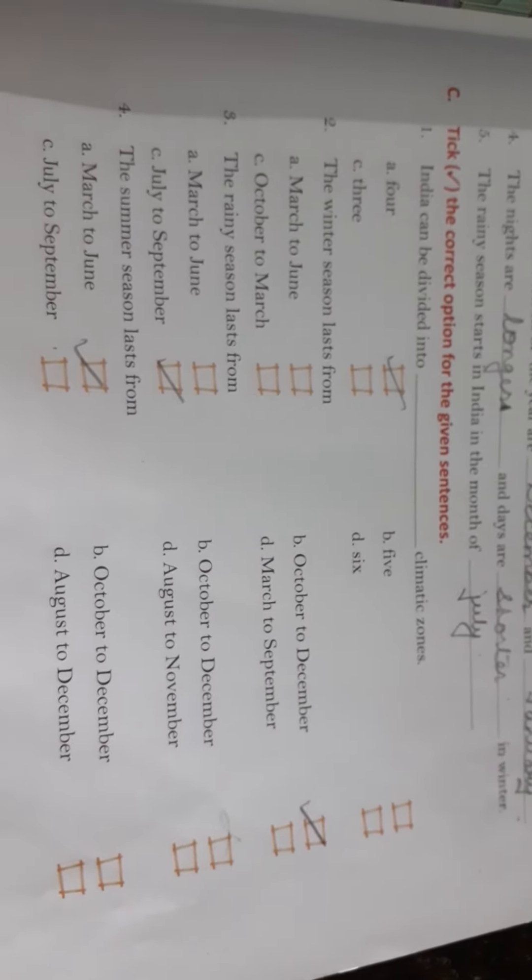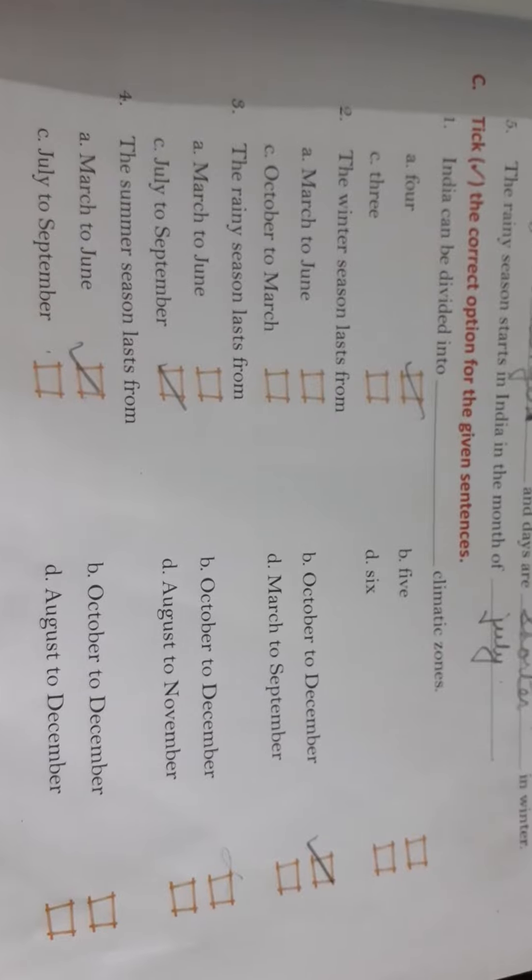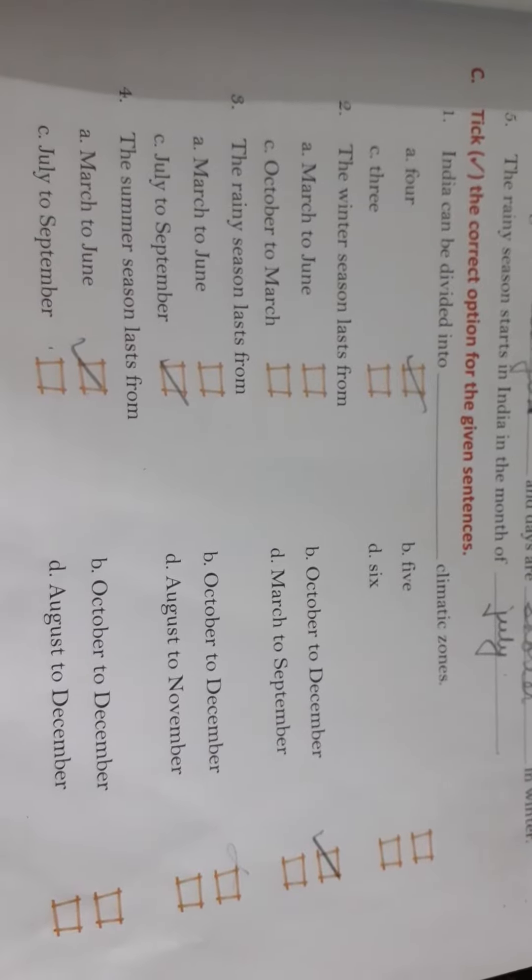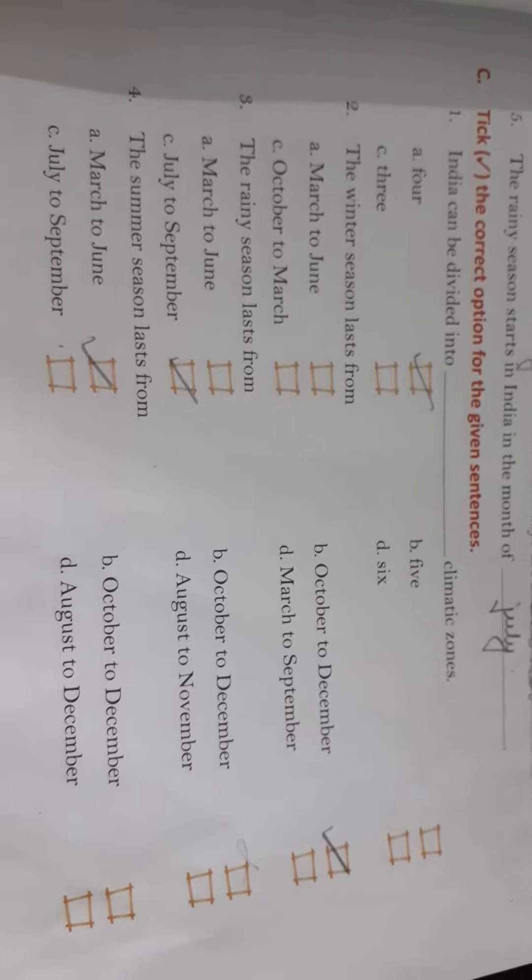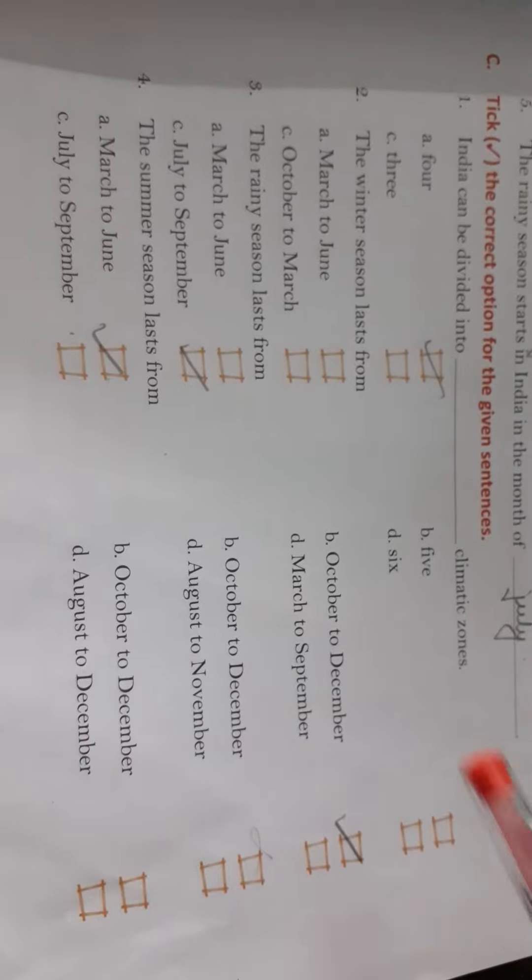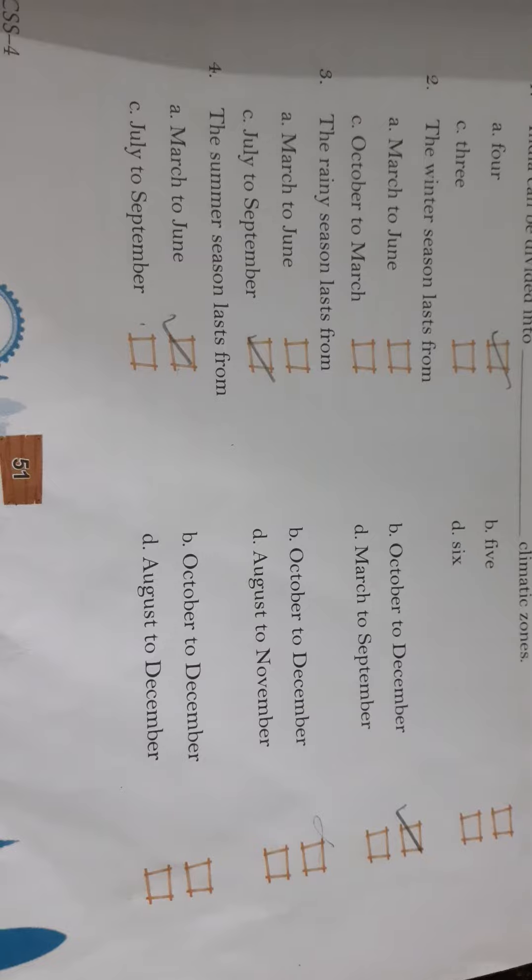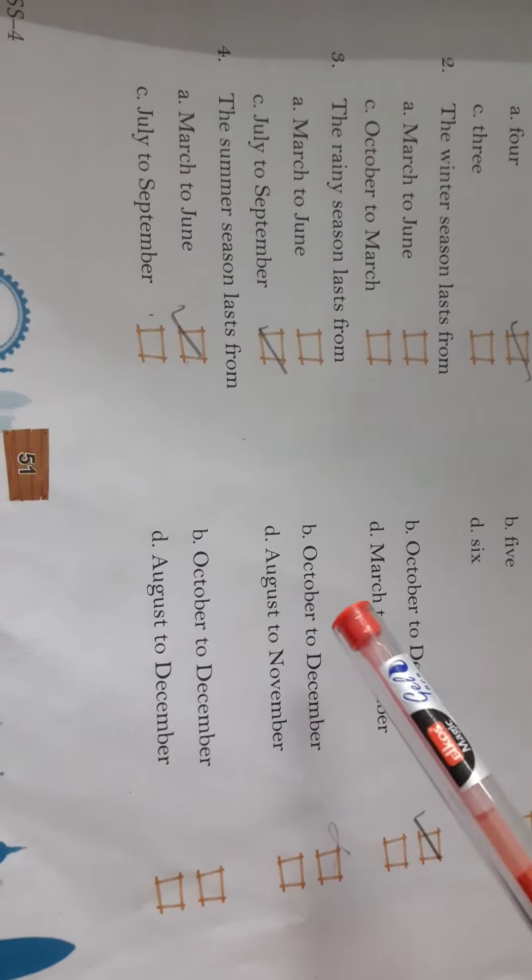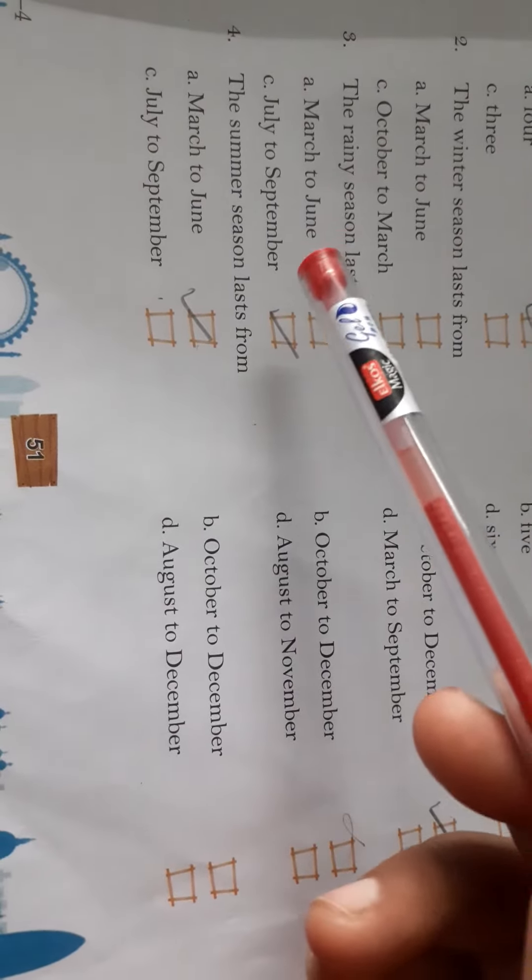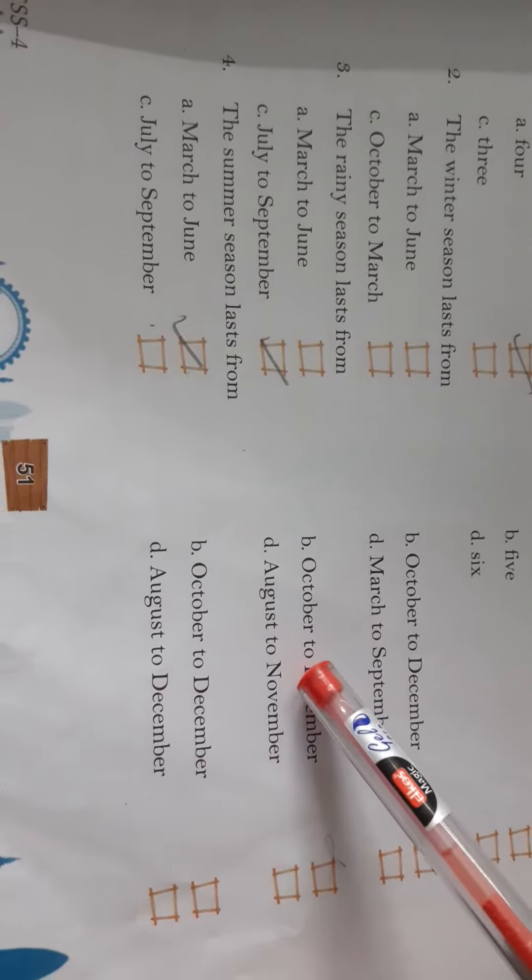The winter season lasts from May, March to June, October to December, October to March, March to September, October to December. The rainy season lasts from March to September, August to November.